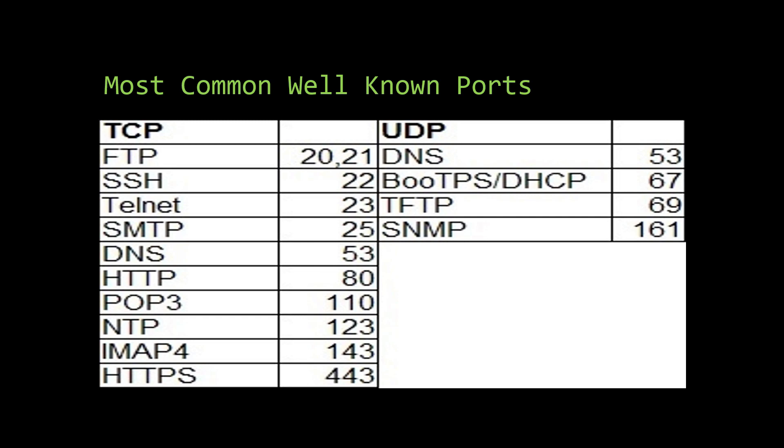For UDP, DNS uses port 53. BootP and DHCP use port 67. TFTP, Trivial FTP, uses port 69. And SNMP uses port 161.